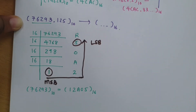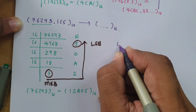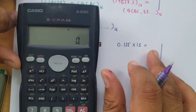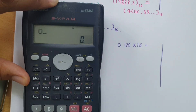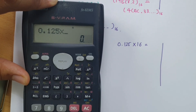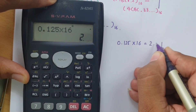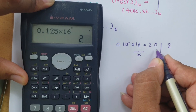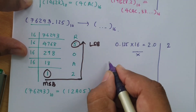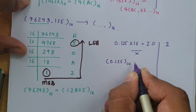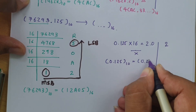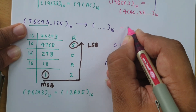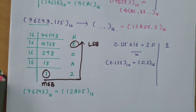For the fractional part, 0.125 multiplied by 16 gives 2.0. The integer part is 2 and the fractional part is 0, so we stop here. Therefore, 0.125 in decimal equals 0.2 in hexadecimal. The complete answer for 76293.125 in decimal is 12A05.2 in hexadecimal.